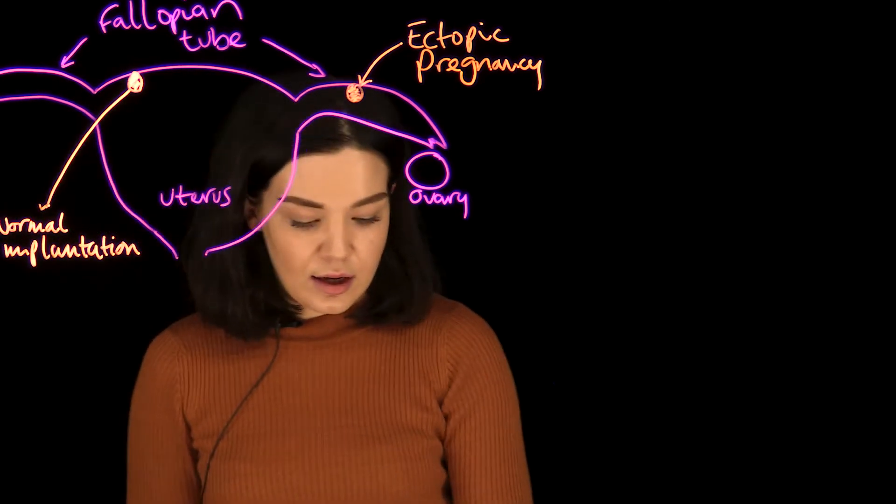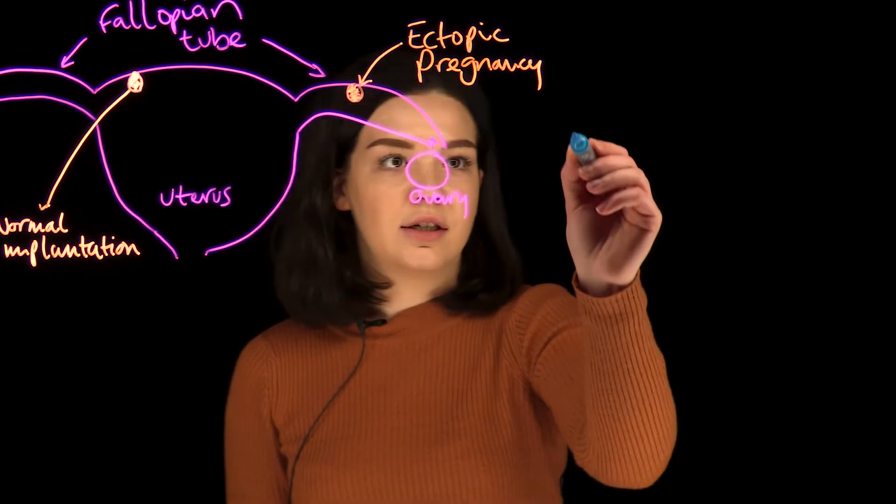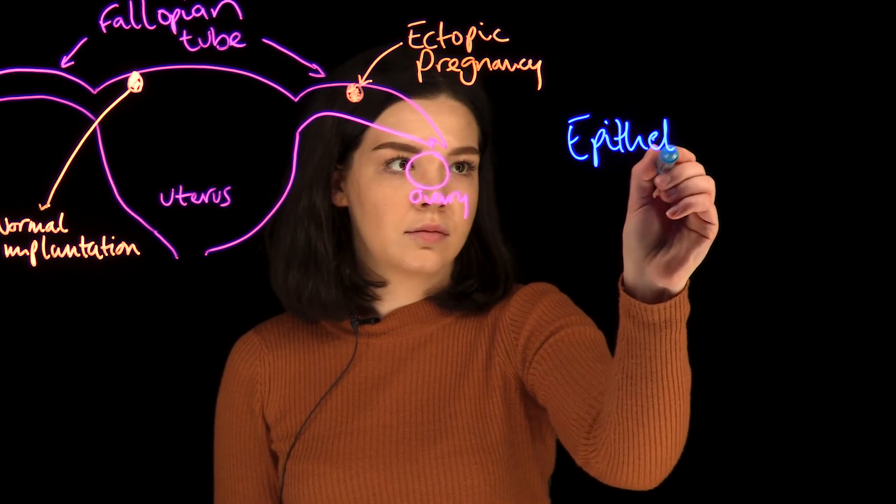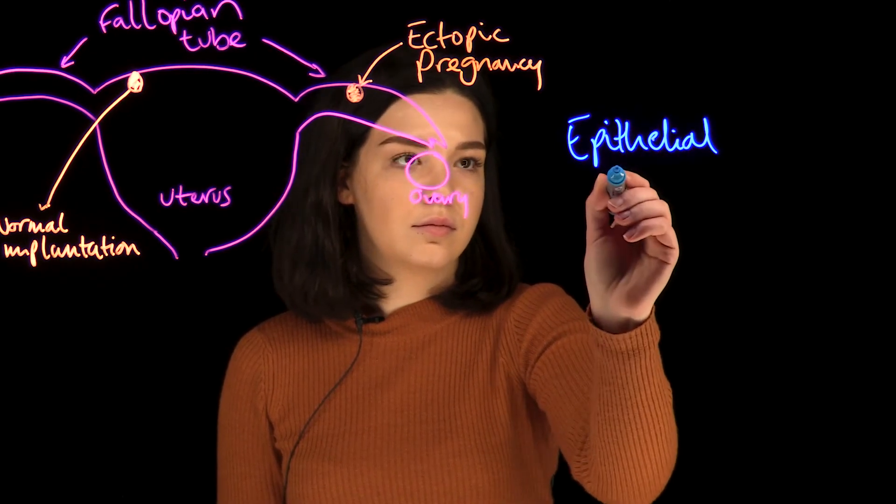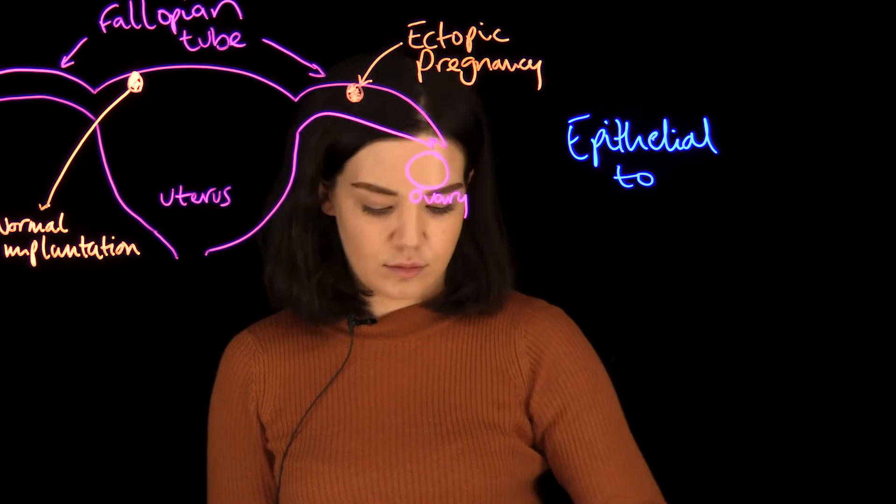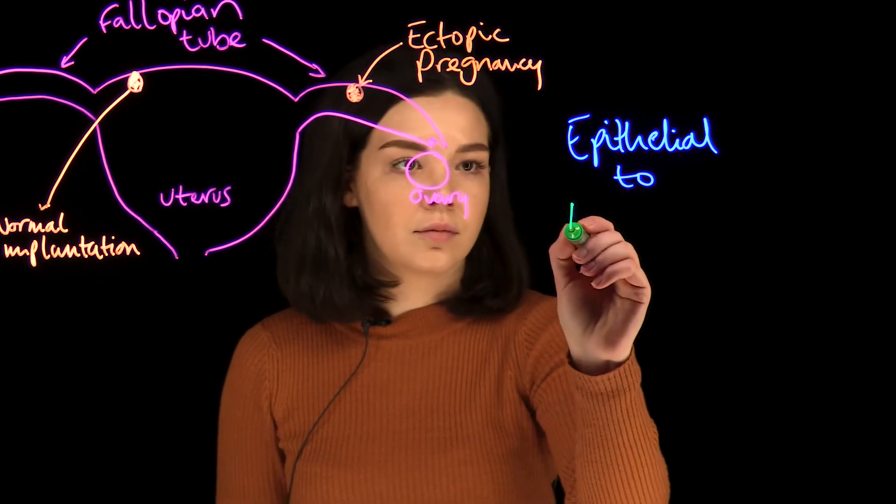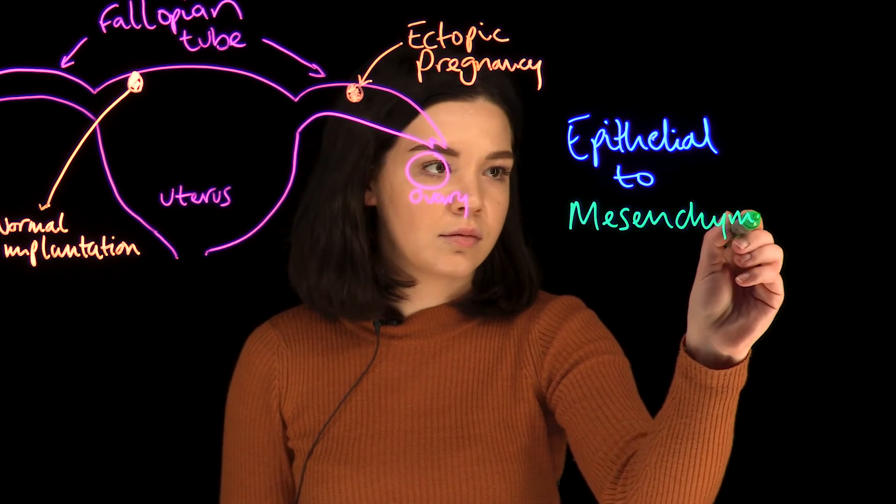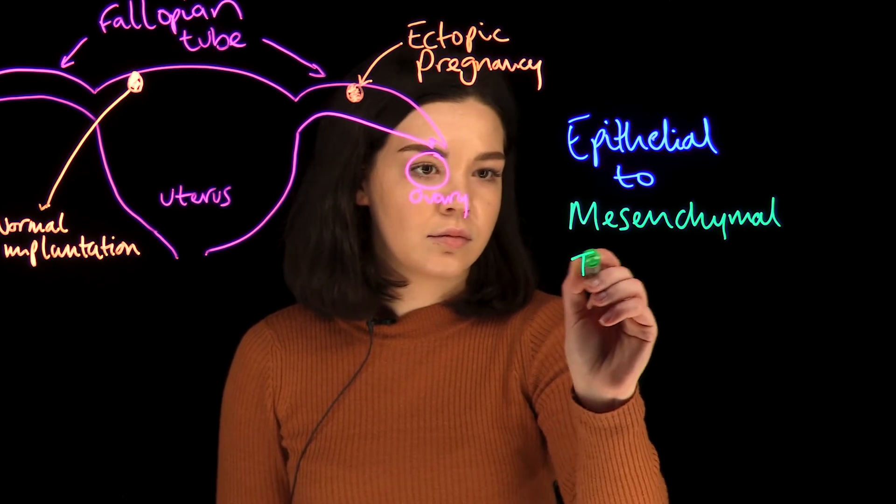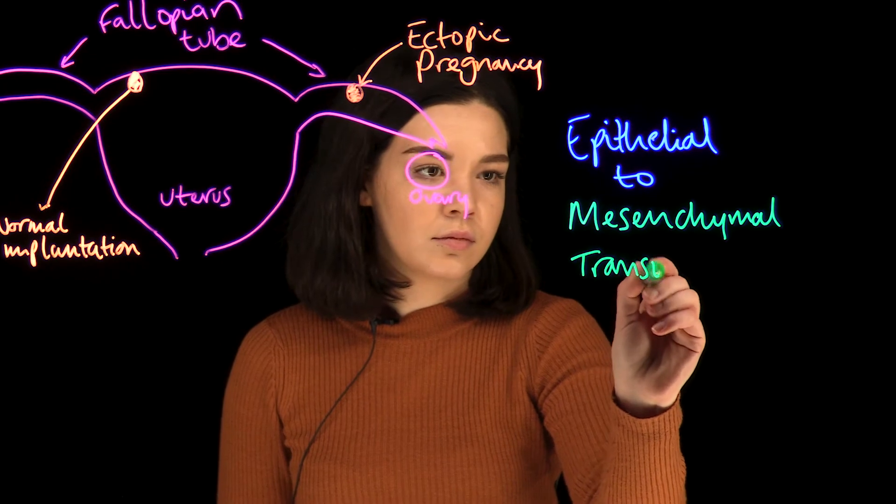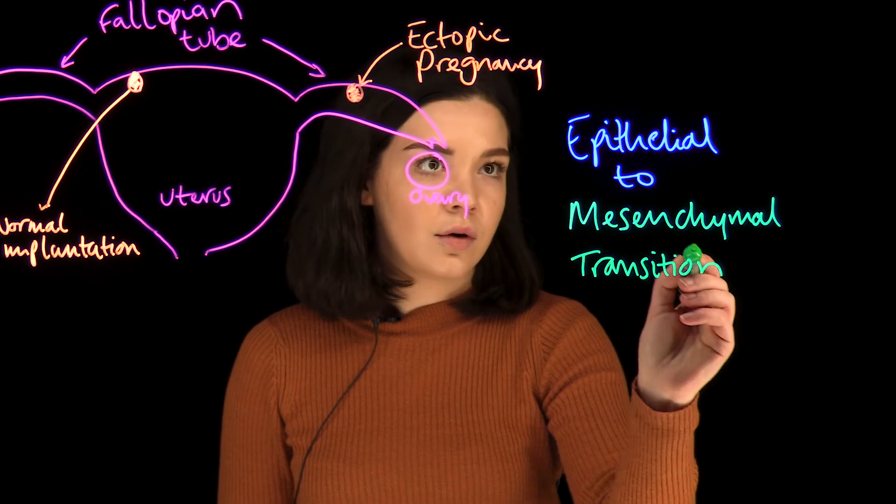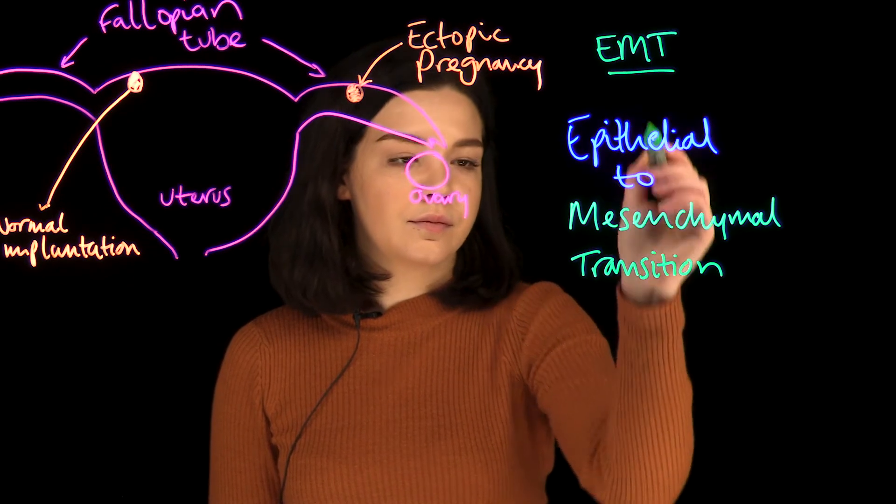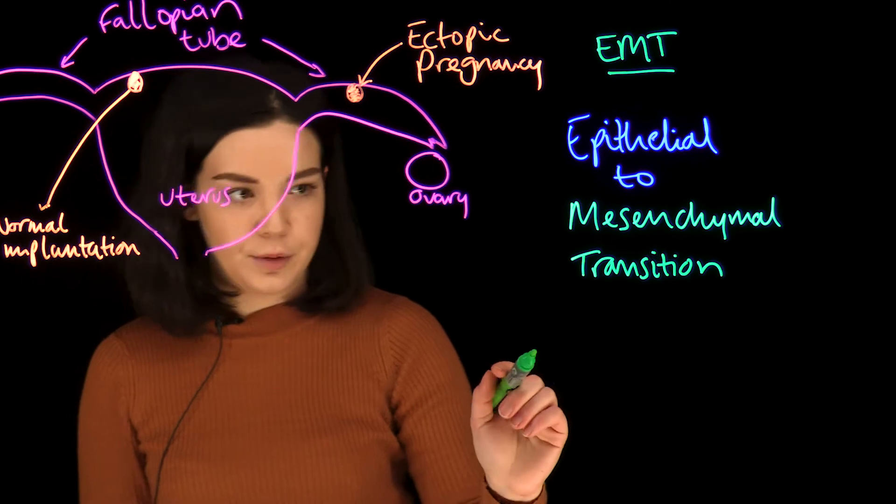This is that epithelial to mesenchymal transition, or EMT, might occur in the fallopian tube.